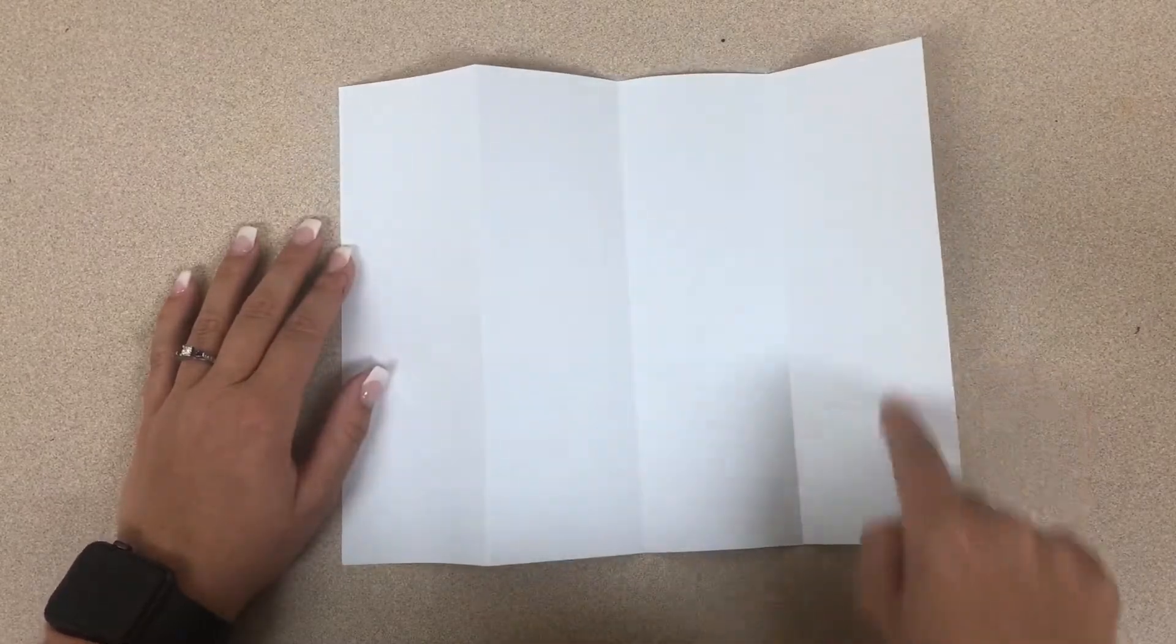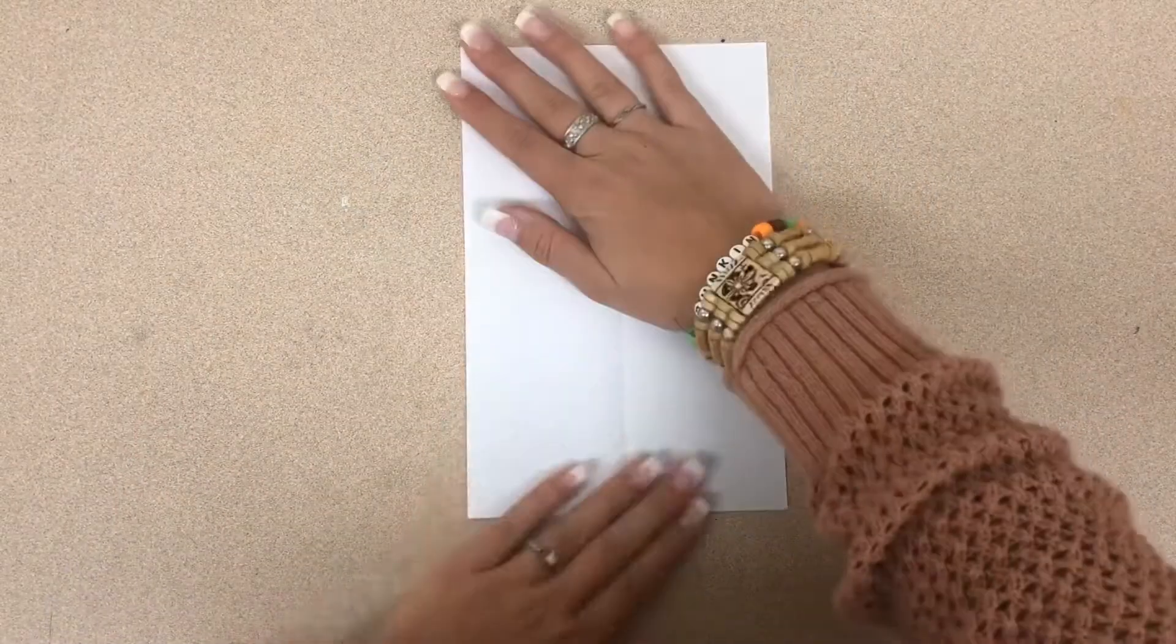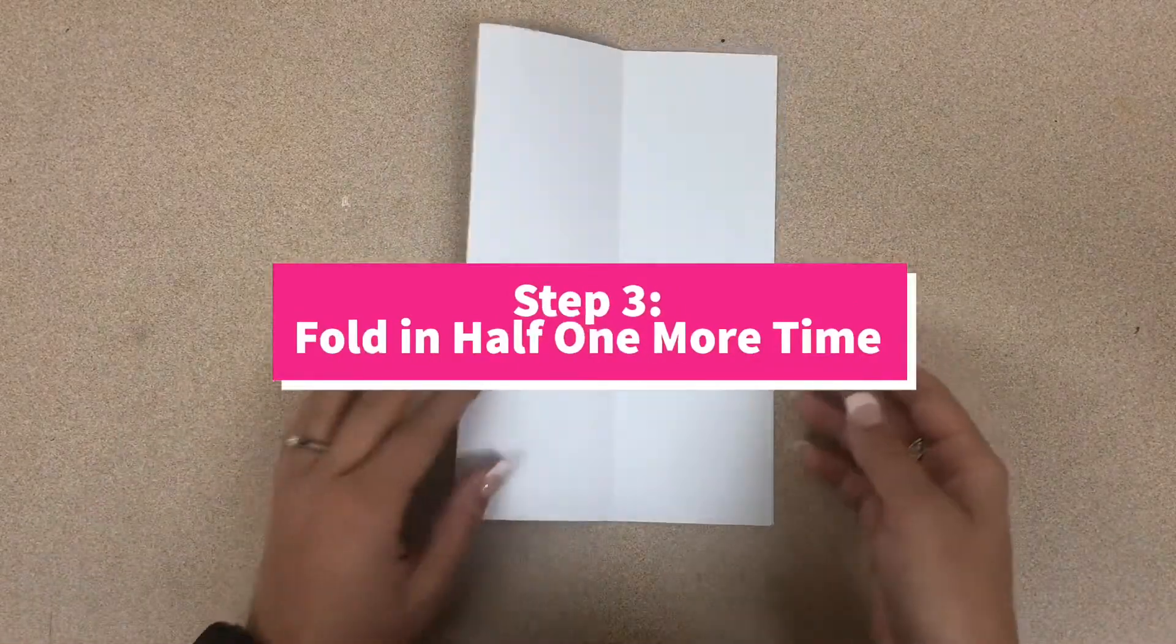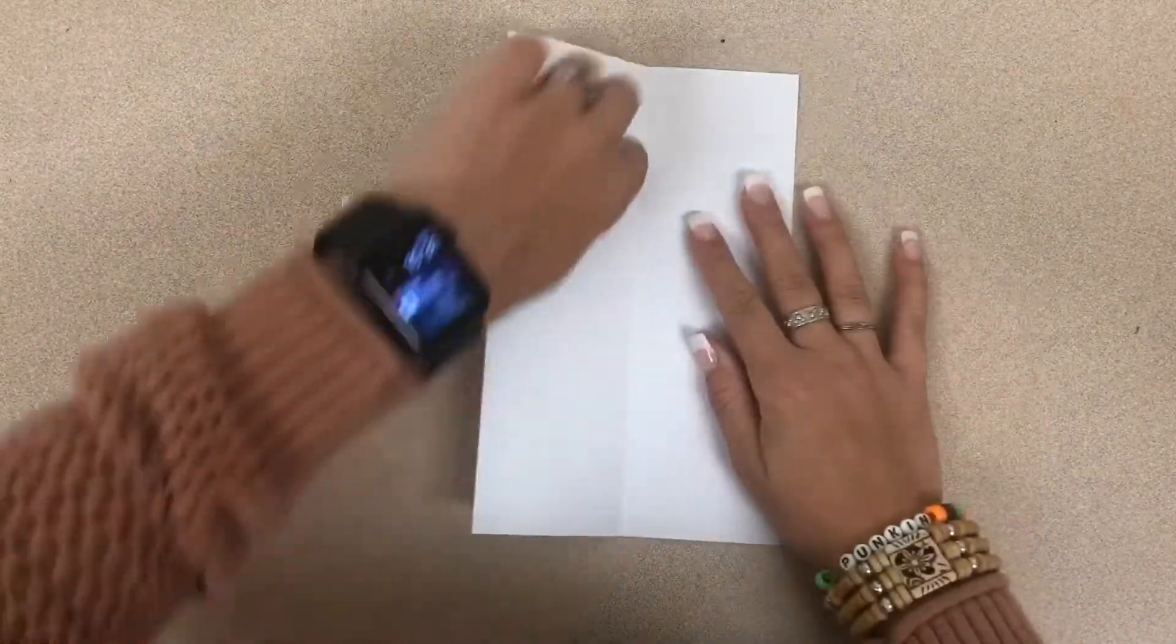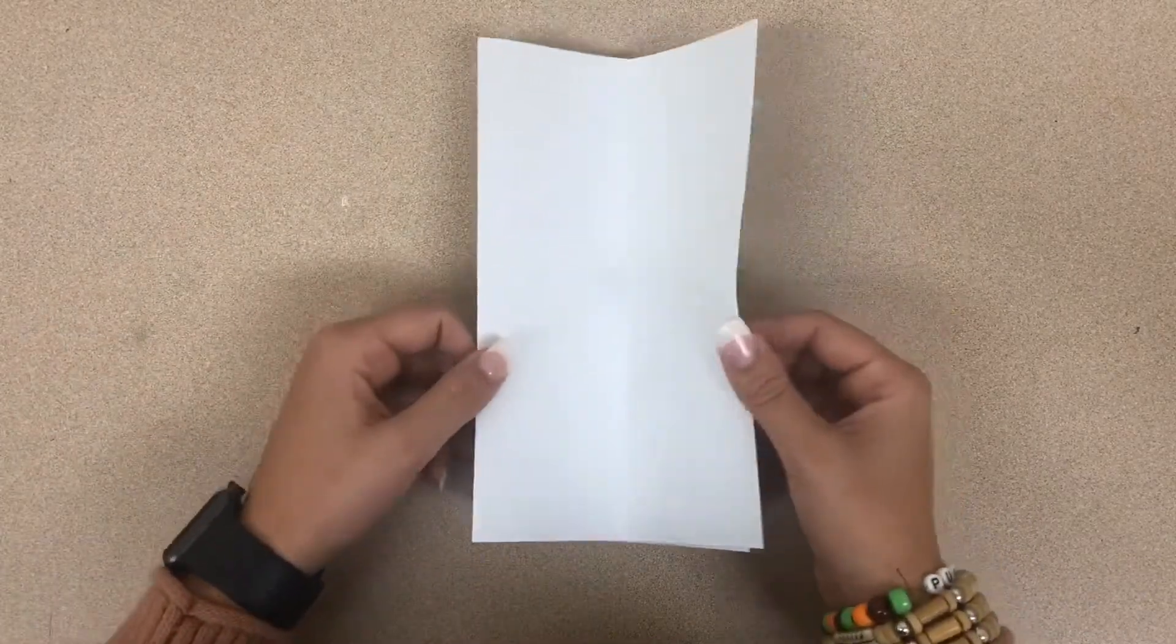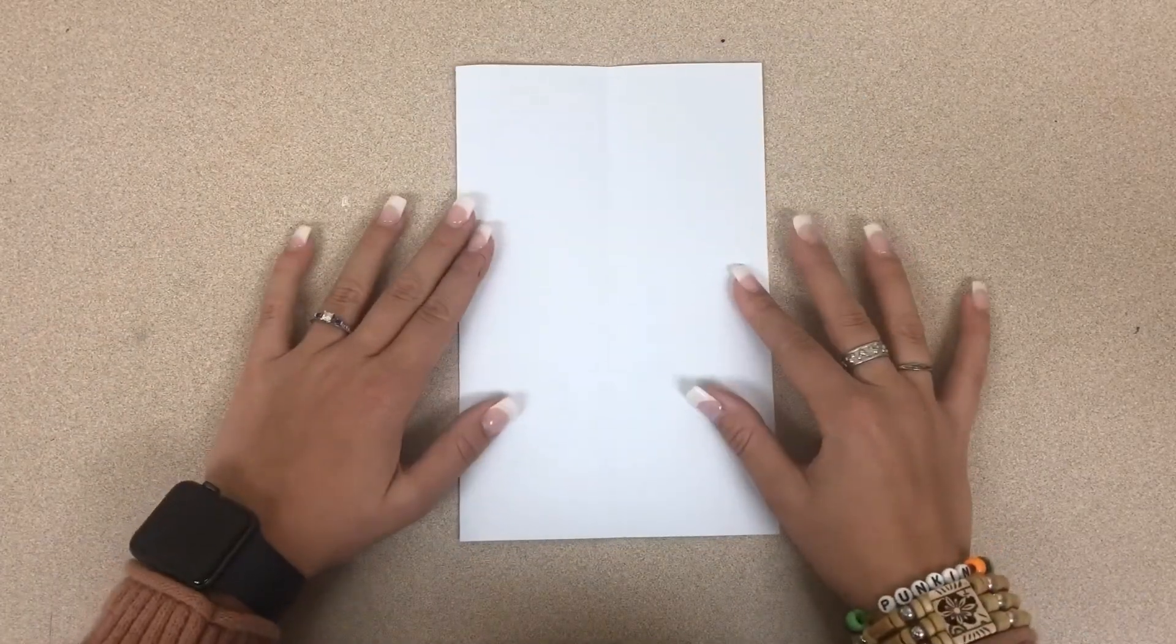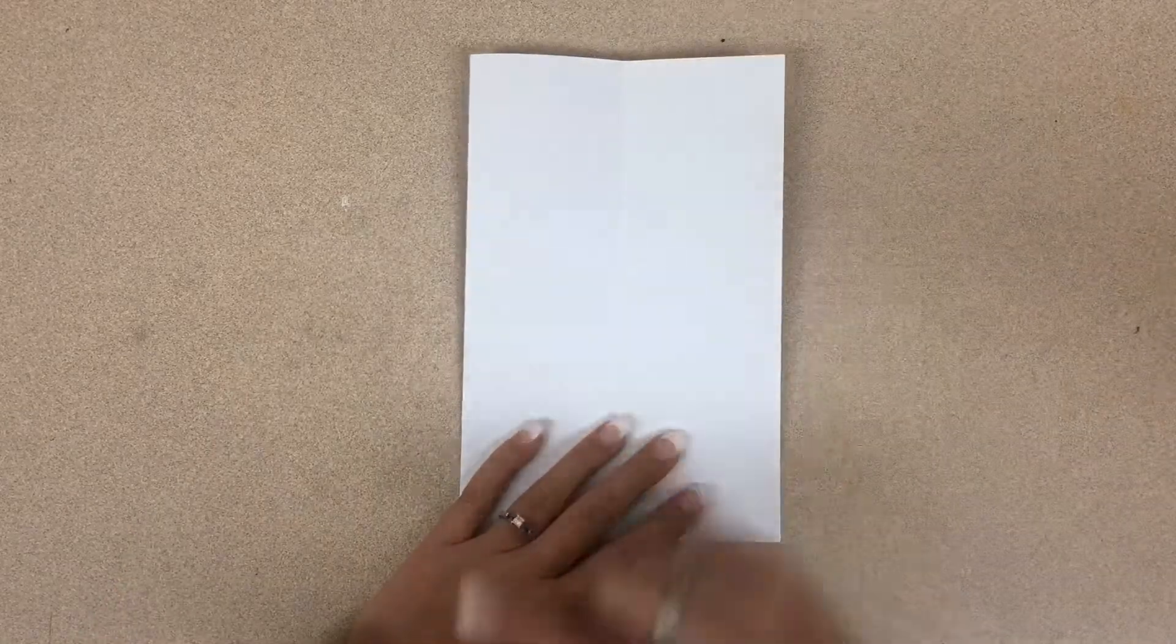For this next part, you need to open it up so that your book is just one fold and you have this middle crease down the middle here. Now we need to fold our book again horizontally.